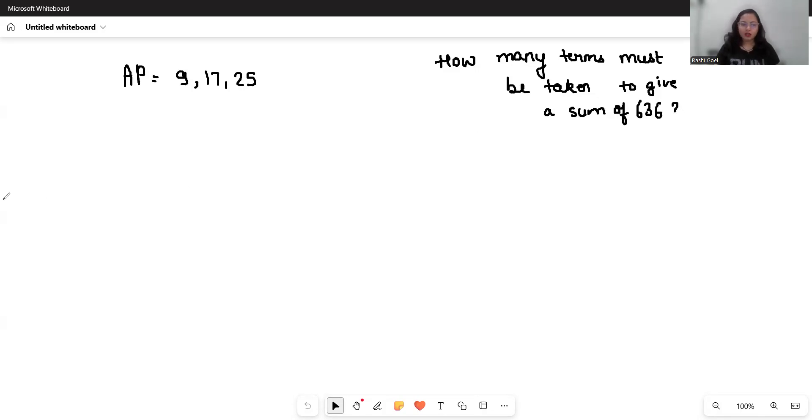So let's find out. In AP, the first term A is 9, and d is the difference between first two terms. So 17 minus 9 is 8. We will check the difference is equal with the subtraction of third and second terms. Yes, so d is 8.